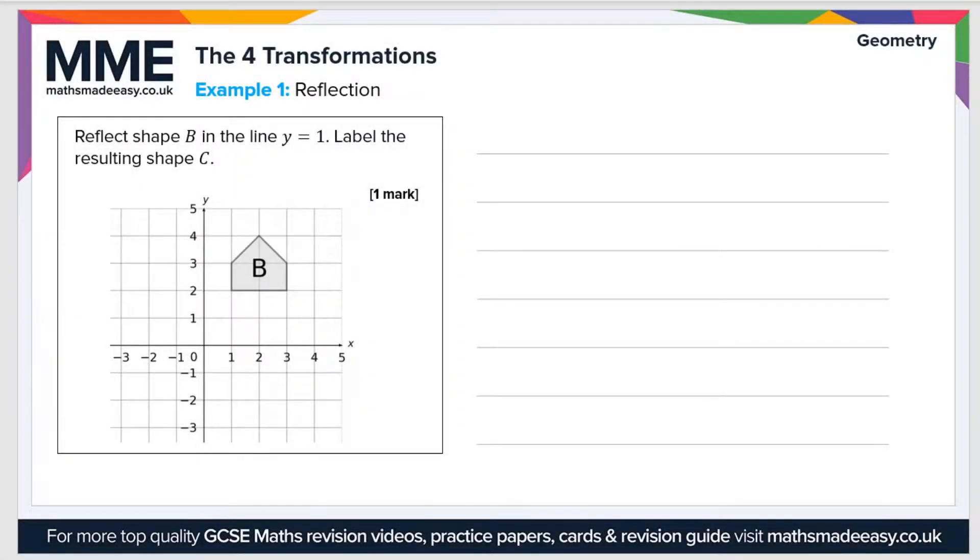So let's take a look at some transformation example questions. Reflect shape B in the line y equals 1, label the resulting shape C. Well, the line y equals 1 is a straight line through the y-axis parallel to the x-axis, and it crosses the y-axis at y equals 1. So every point on this line has a y coordinate of 1.